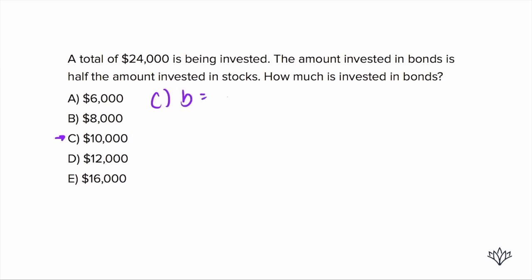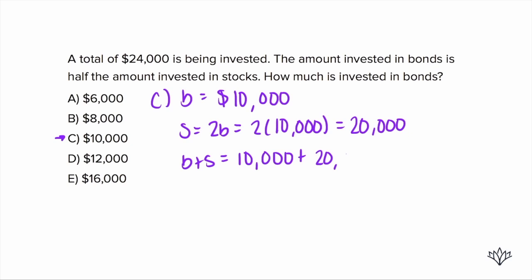So for bonds, we're going to use answer choice C, $10,000. It says the amount invested in bonds is half the amount invested in stocks. So if $10,000 is half, what's the stock amount going to be? It's going to be twice $10,000, which is $20,000. $10,000 plus $20,000 is $30,000, not $24,000. So what do we need to do? We definitely need to go to a smaller one.